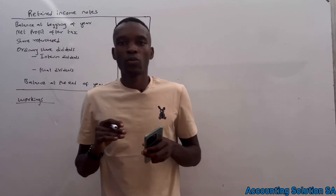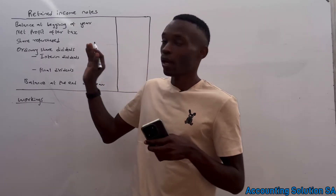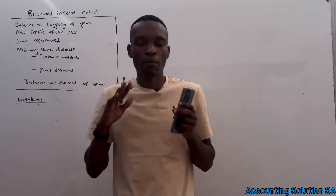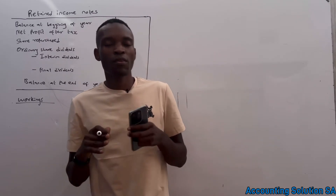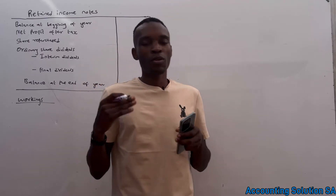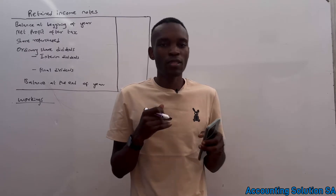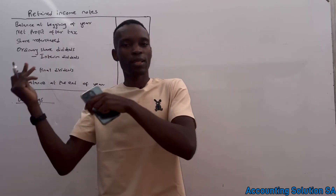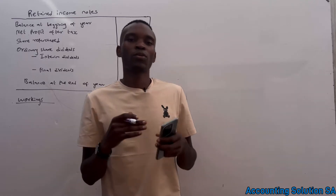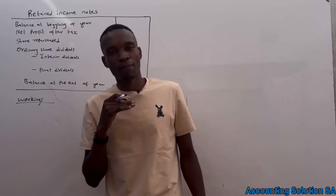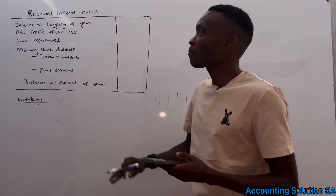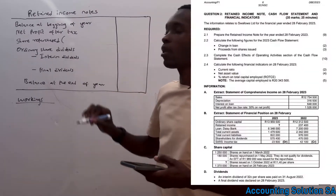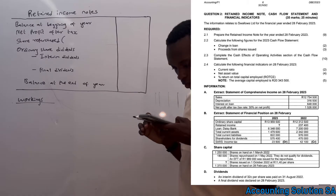In this video we are going to do Retaining Income Part 3. The main thing I want you to understand is how to calculate average share price, because it is difficult and there are a lot of tricks involved. When you practice last year's question papers you will find it different from the year before, so please watch until the end to gain the knowledge on how to do this. We are going to prepare a retaining income statement and calculate the average.